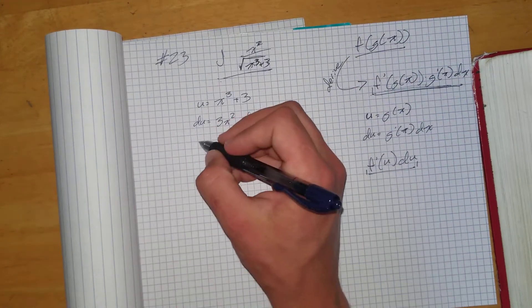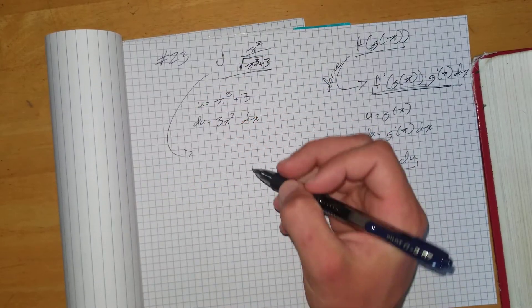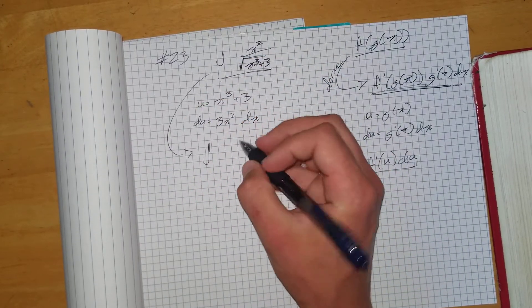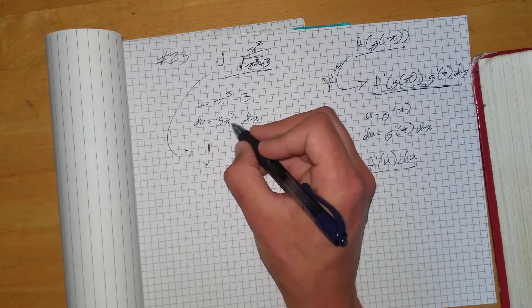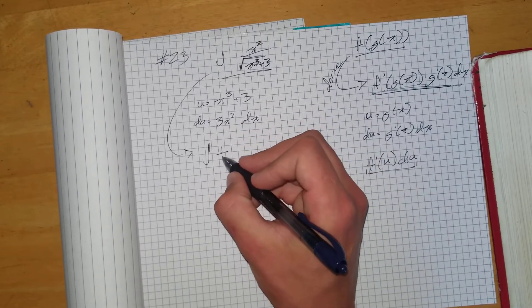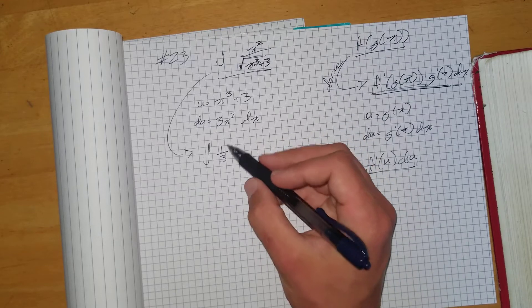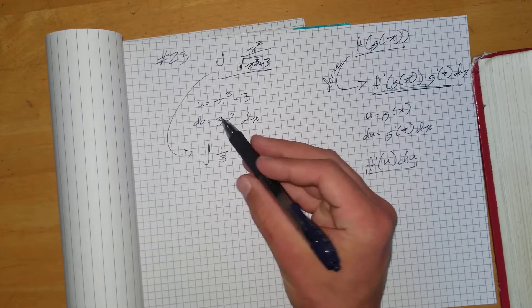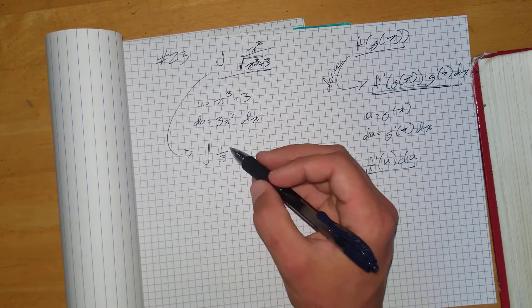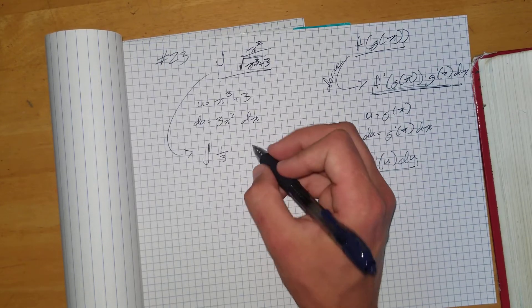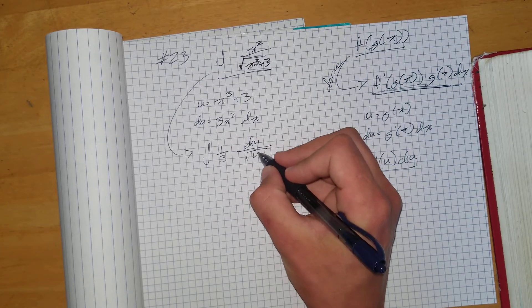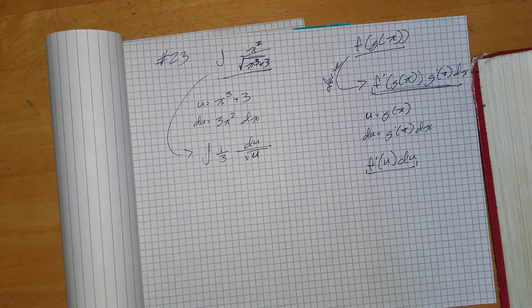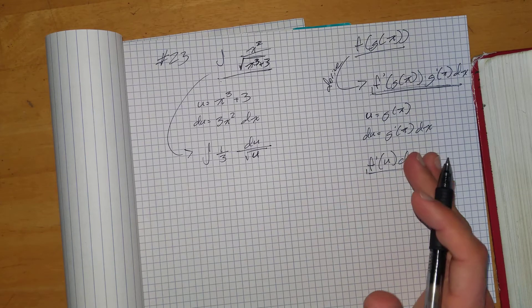So now I can rewrite this in terms of u. So I have to get rid of this 3 somehow. So I'm going to multiply this whole function by 1 third. Because 1 third times 3 is going to equal 1. So again, writing this in terms of u will look like that. So we've subbed everything in.